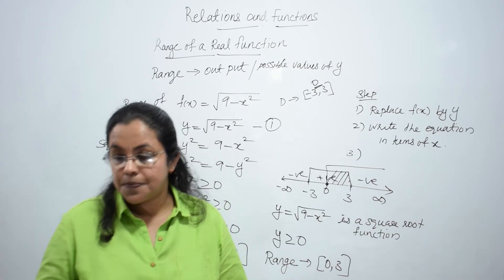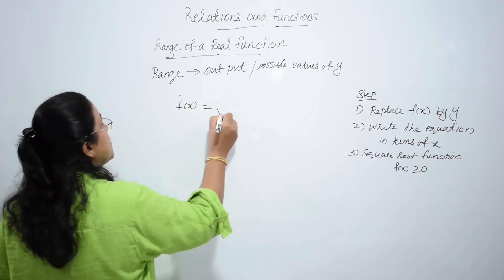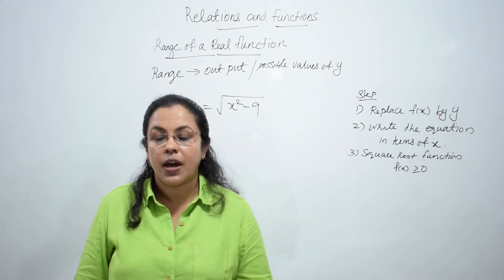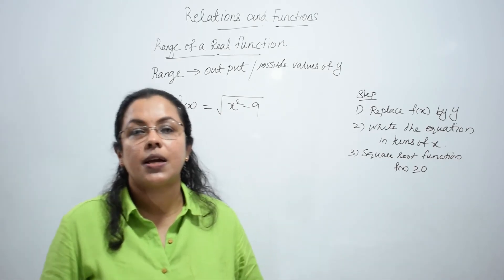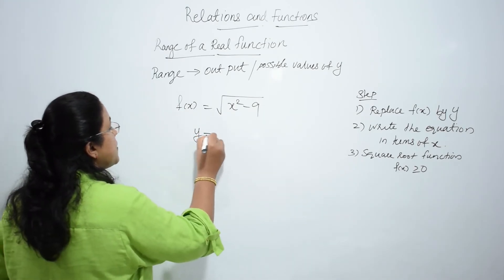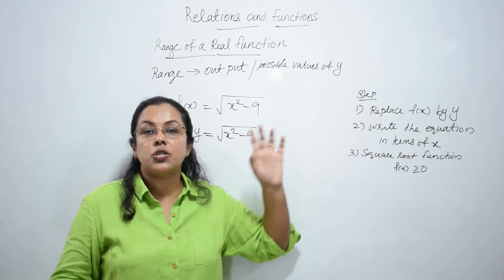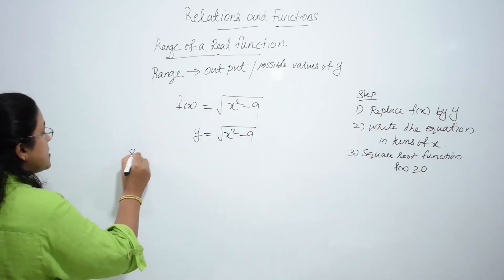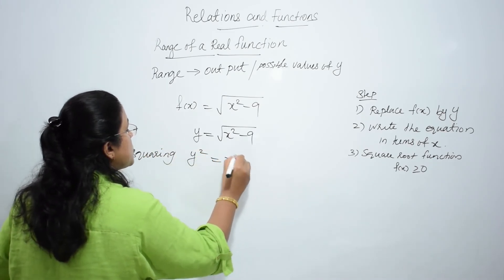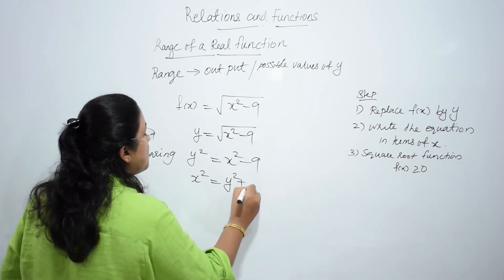Let us discuss some more questions. Consider the function: find the range of f(x) = √(x² - 9). Step 1, replace f(x) by y: y = √(x² - 9). Squaring both sides, we get y² = x² - 9. Write the equation in terms of x: x² = y² + 9.